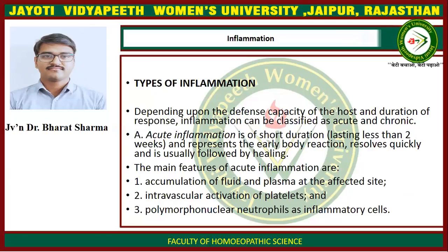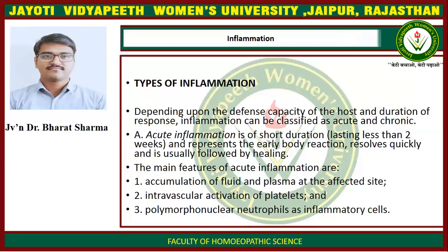Types of inflammation: Depending upon the defense capacity of the host and duration of responses, inflammation can be classified as acute and chronic. First is acute inflammation. It is of short duration, lasting less than two weeks, and represents the early body reaction, results quickly, and is usually followed by healing. The main features of acute inflammation are: first, accumulation of fluid and plasma at the affected site; second, intravascular activation of platelets; and third, polymorphonuclear neutrophils as inflammatory cells.